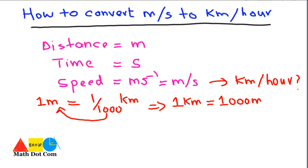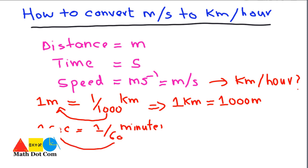Now, one second equals how many minutes? After seconds come minutes, and after minutes come hours. So one second is equal to 1/60 minute. And if we ask how many seconds are in one minute, we move the 60 to the other side and get one minute equals 60 seconds.